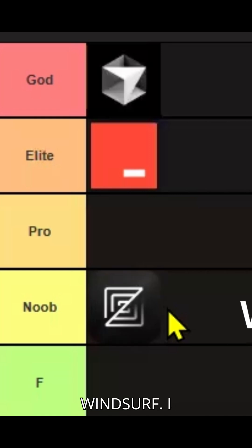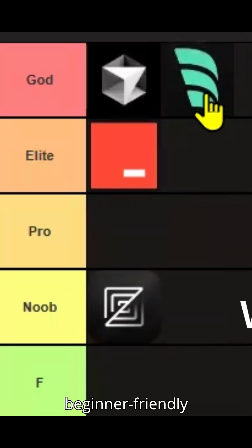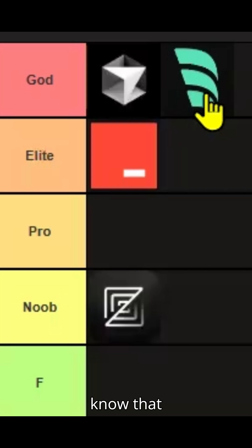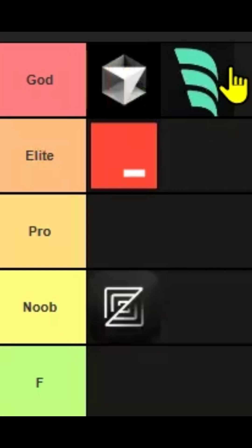Then we have Windsurf. I think Windsurf should also go in God tier. The reason is that it is the best user-friendly or beginner-friendly AI coding IDE. It has good code completion, great UI, great VS Code integration, and so many model support. When you compare Cursor and Windsurf, Cursor is a little bit better, but Windsurf is $5 cheaper per month. So overall, when it comes to the package, Cursor is better, but Windsurf has to go in God tier because it's really good.